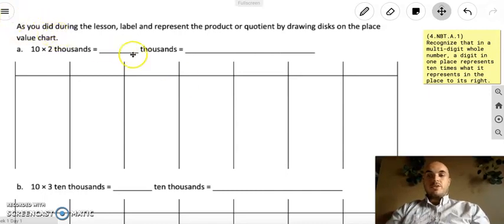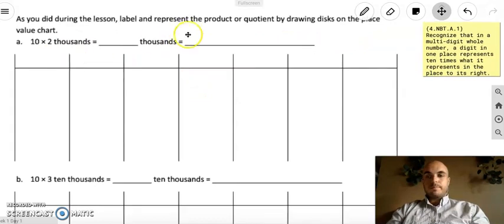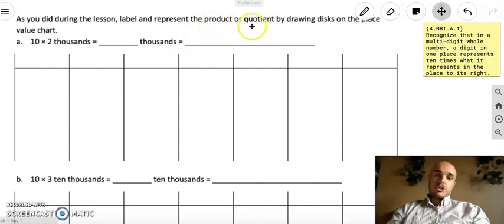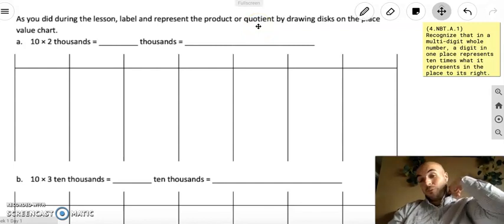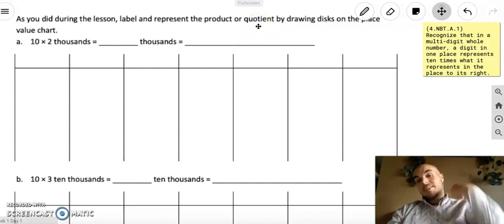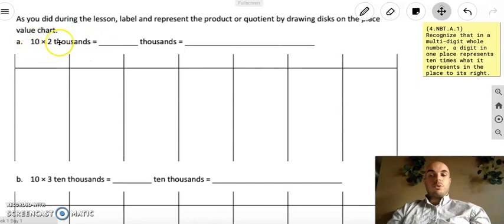So, it says here, as you did during the lesson, this is our lesson, we're going to label and represent the product or quotient by drawing disks on the place value chart. So, let's look what this is here. What they mean by product or quotient, product is the answer to a multiplication question and quotient being the answer to a division question. Now, we're not doing big multiplication or big division yet in the first day of fourth grade math. Don't worry. But this is going to be just a simple version of it using this place value chart to go over this.